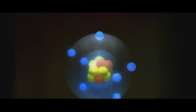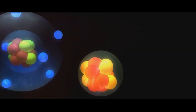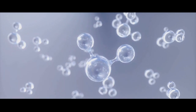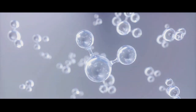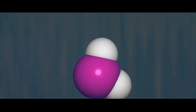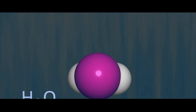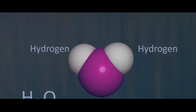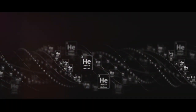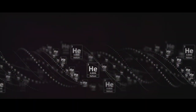Although the universe was cooling, it was still unbelievably hot by our standards. It was a plasma soup of protons, neutrons, electrons, and photons. As the universe continued to expand and cool, these particles began to combine to form atoms, primarily hydrogen and helium atoms. And here's where things start to get interesting — hydrogen is the first and most abundant element in the universe. It makes up about 75% of its elemental mass, and it's also the first component of a water molecule.